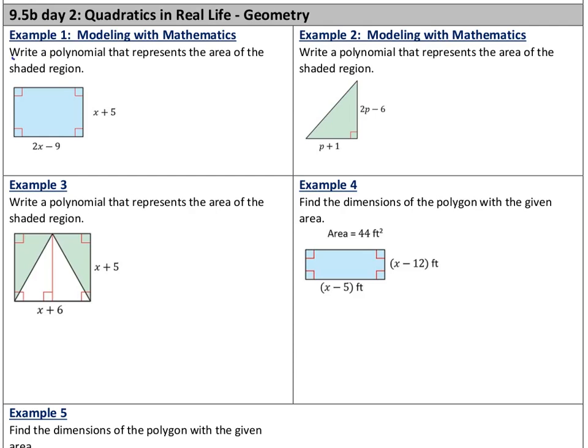So our first example, it doesn't say to solve anything, just write a polynomial. Here I'm looking at a figure that is a rectangle, and we're told to use the area of that shaded figure. The area of a rectangle is its length times its width, and here the binomials 2x minus 9 and x plus 5 are representing the length and the width. So I'm going to substitute those in to get a polynomial.